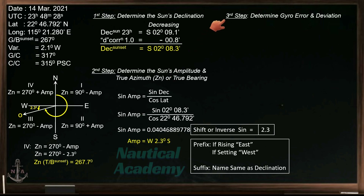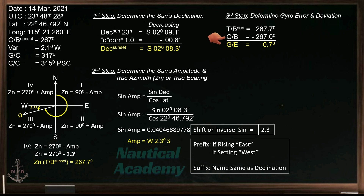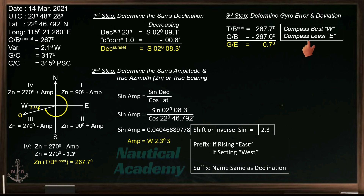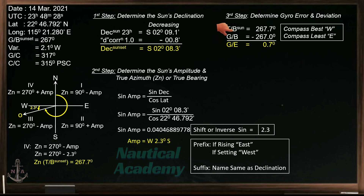For our third and final step, determine the gyro error and the deviation for the ship's present heading. The difference between the true bearing and gyro bearing is the gyro error, which is 0.7 degrees. Subtract lesser from greater. The common error of our gyro compass is usually less than 1 degree. To determine the direction of the gyro error, you can use this rhyming rule: if the compass is best, the error is west; if the compass is least, the error is east. Best refers to a greater value, while least refers to a lesser value. Since the value of the compass is lesser, the direction of our gyro error is east.